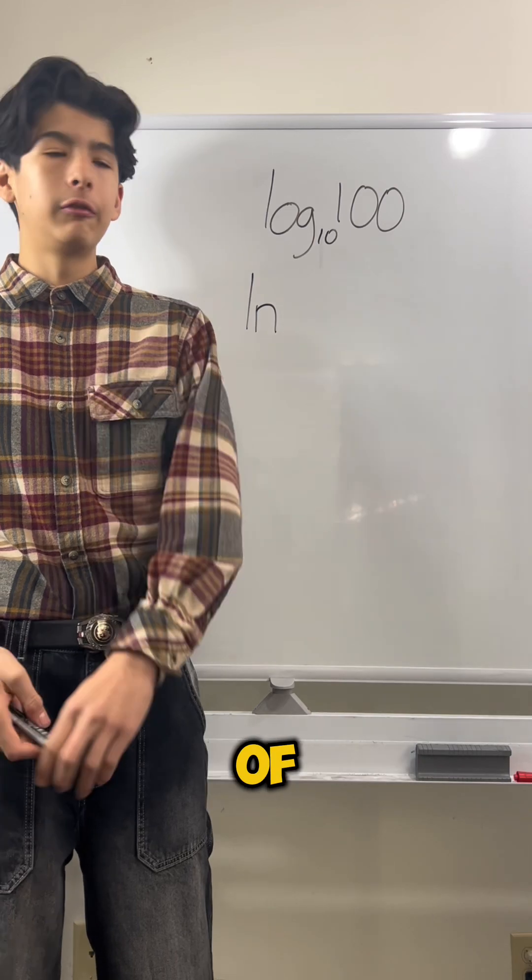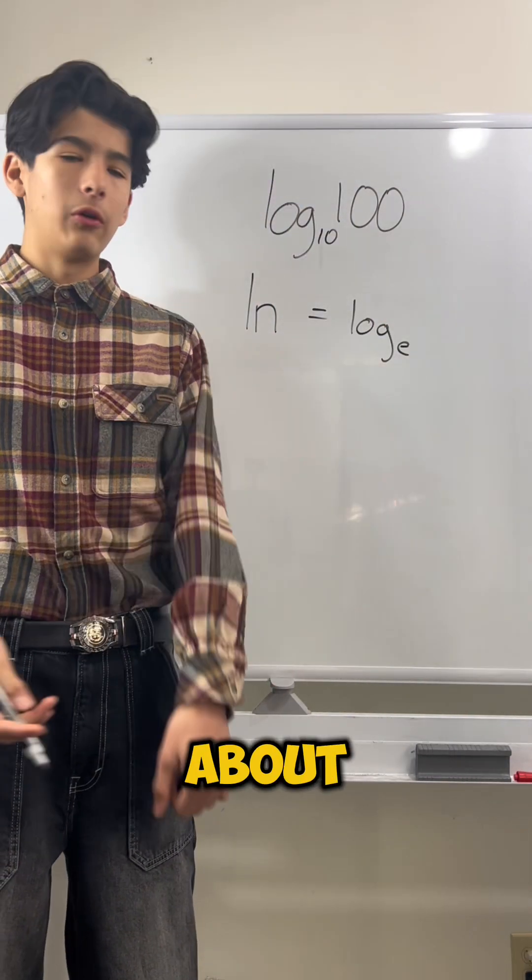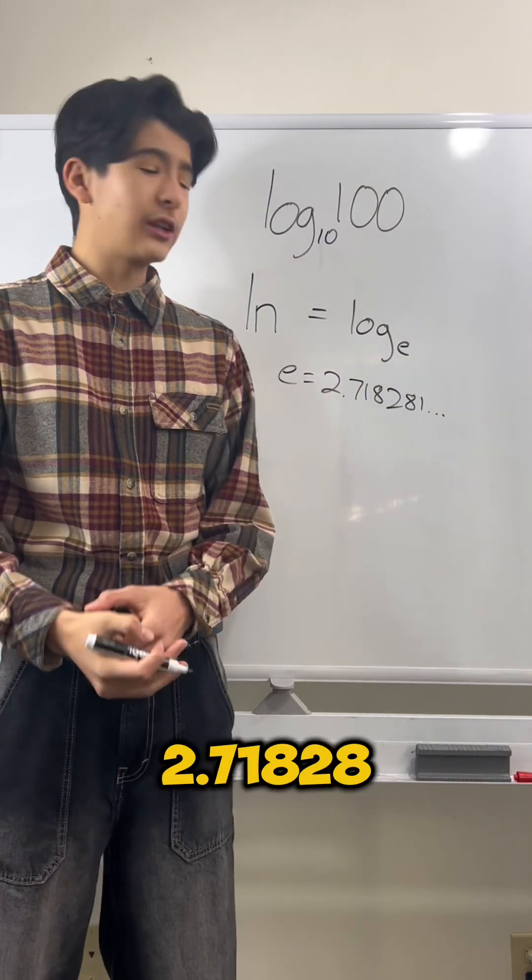Now if you see this ln, it stands for natural logarithm, and it's flipped but essentially this is just a logarithm with a base of e, which is about 2.71828.